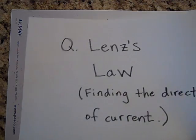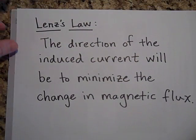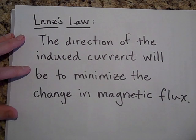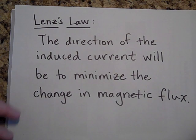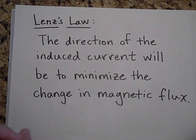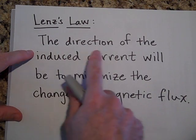Here's Lenz's law — I'm going to give you two versions of Lenz's law and then show you many examples. For Lenz's law, the direction of the induced current will be to minimize the change in magnetic flux. You use Lenz's law to find the direction of the induced current.